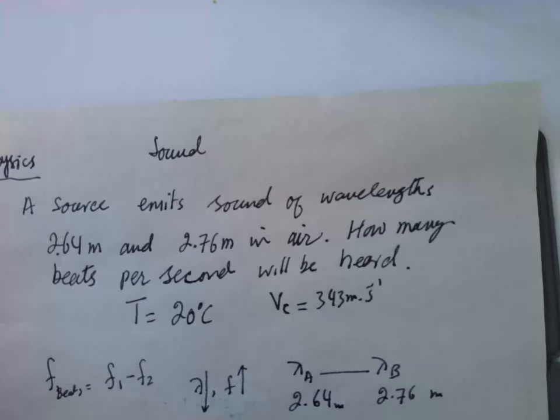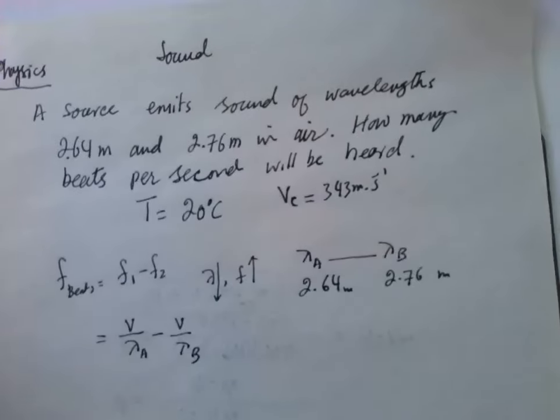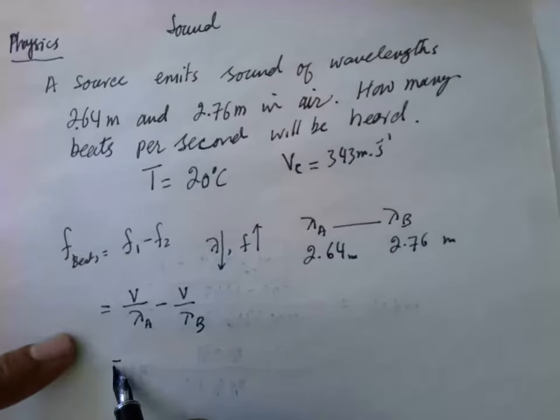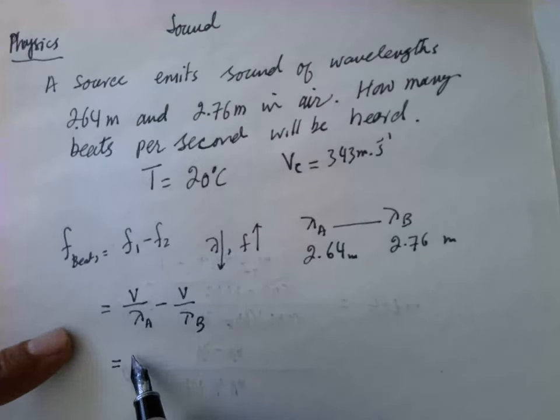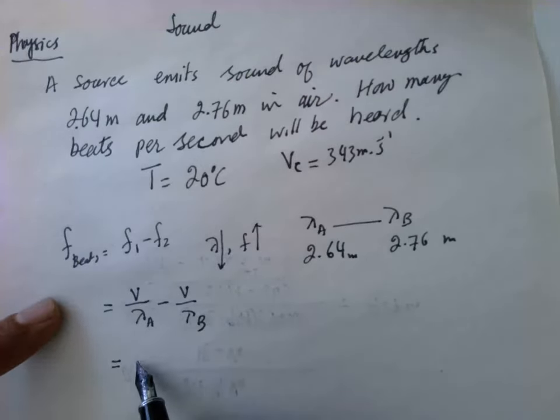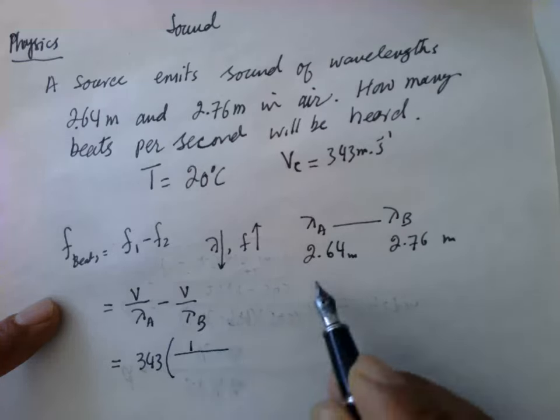So this will be velocity over wavelength A minus velocity over wavelength B. The velocity is common, so velocity is 343 times...